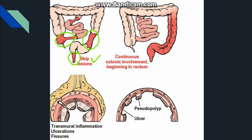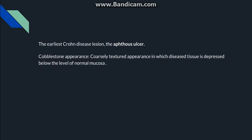Skip lesions are characteristic of Crohn's disease. Crohn's disease also causes inflammation of all layers of the intestine from the mucosa to the serosa, and is therefore called transmural inflammation. This transmural inflammation leads to deep ulcerations and fissure formation, and because the inflammation extends through the intestinal wall, there is increased risk of perforation.